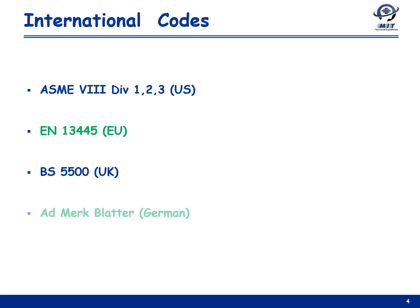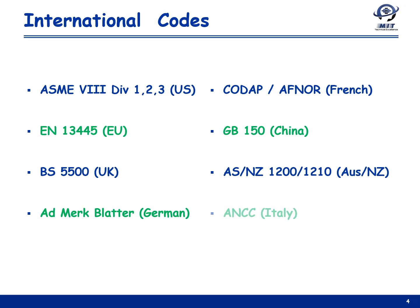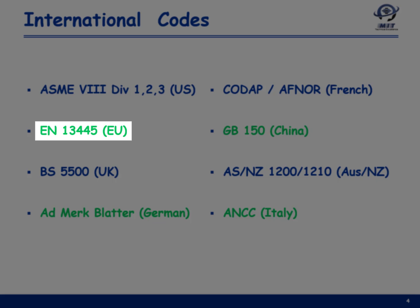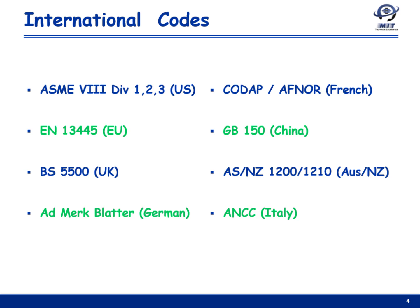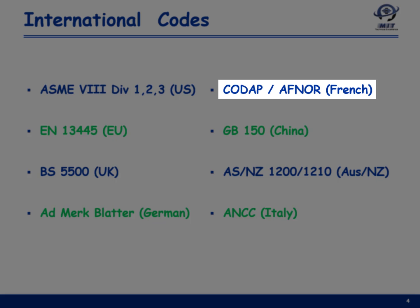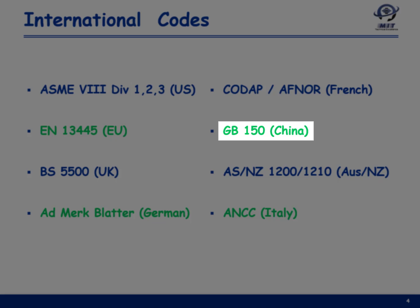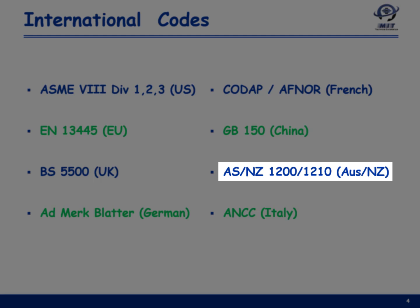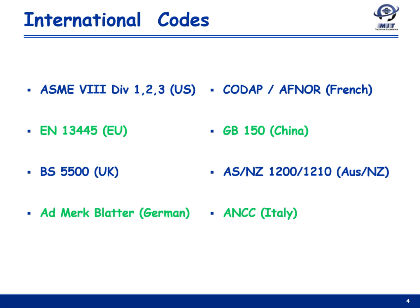Almost all developed and developing countries have their own set of codes, which are applicable globally. In America, the most popular BPVC codes are ASME Section 8 Division 1, 2, and 3. In Europe, we have EN 13445, and one of the most popular pressure vessel codes is BS 5500, now called PD 5500. In Germany, we have AD Merkblätter; in France, Code APP and AFNOR codes; in China, GB 150 code for pressure vessels; for Australia and New Zealand, AS 1200/1210; and in Italy, the ANCC code.